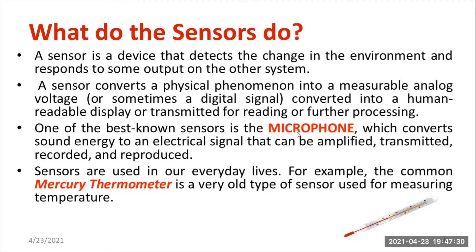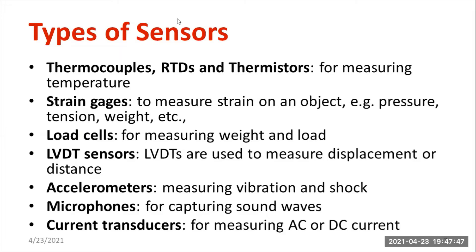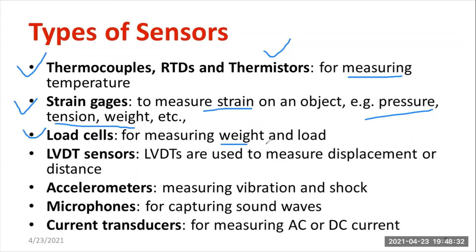Sensors measure changes in physical quantity or the environment — temperature, pressure, etc. Popular examples include microphone and thermometer. Different types of sensors include thermocouples, resistive temperature detectors (RTD), and thermistors. Thermocouples operate on the Seebeck effect: there is a hot junction and a cold junction, and the difference between them produces a voltage. Thermistors are based on positive and negative temperature coefficients of resistance and are used in air conditioning systems. Strain gauges can measure strain, pressure, tension, and weight. For measuring weight and load, load cells are used.